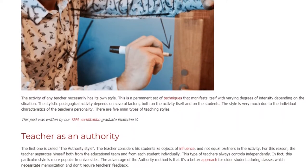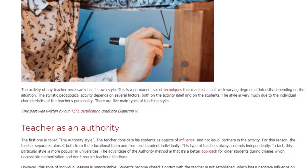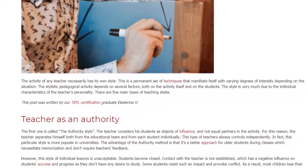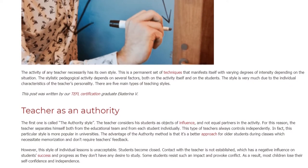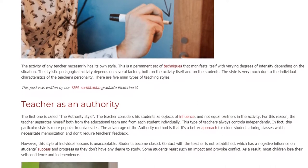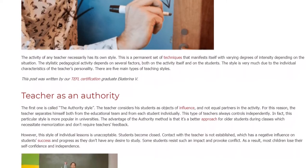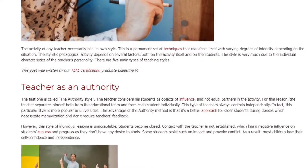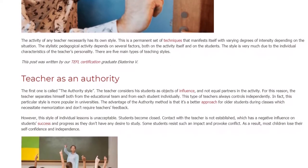The first one is called the authority style. The teacher considers his students as objects of influence, and not equal partners in the activity. For this reason, the teacher separates himself both from the educational team and from each student individually. This type of teacher always controls independently. In fact, this particular style is more popular in universities.